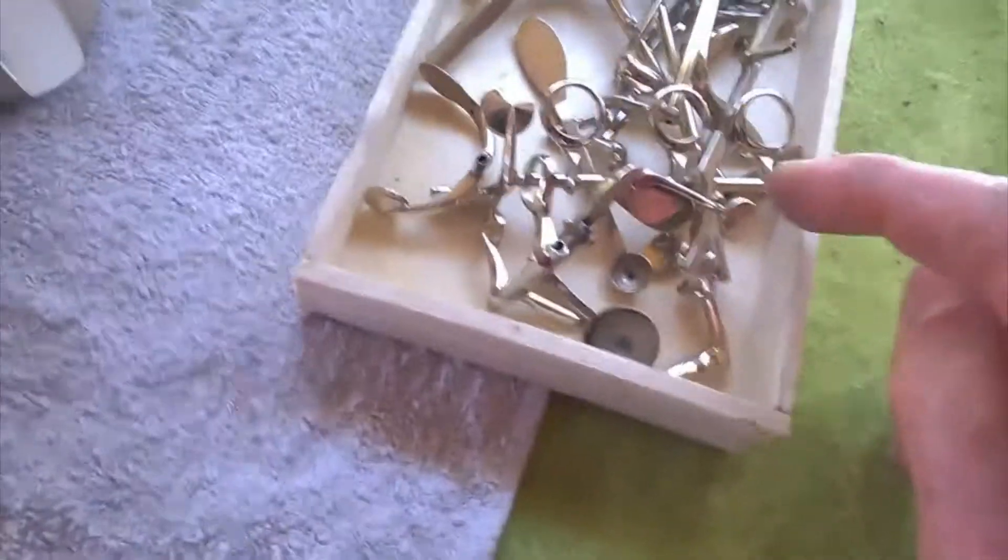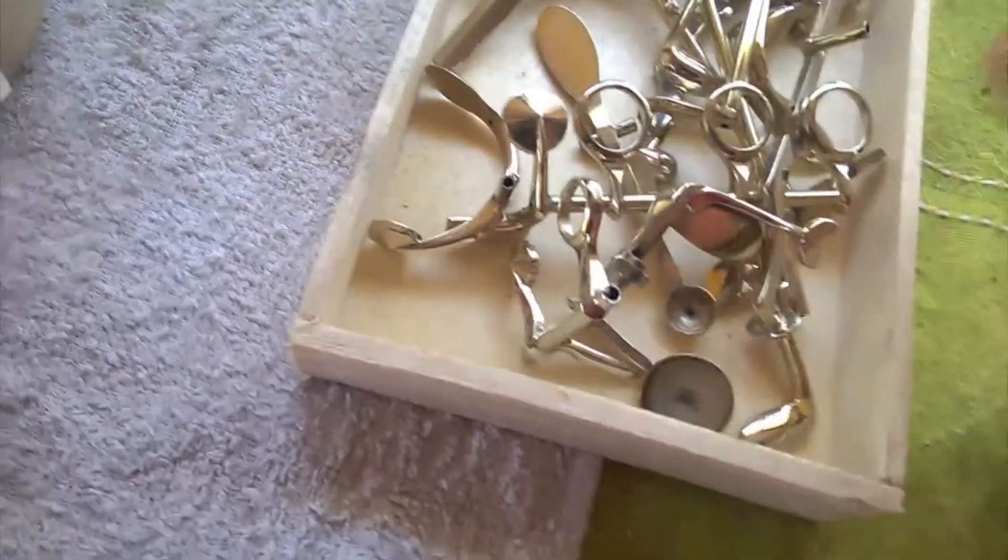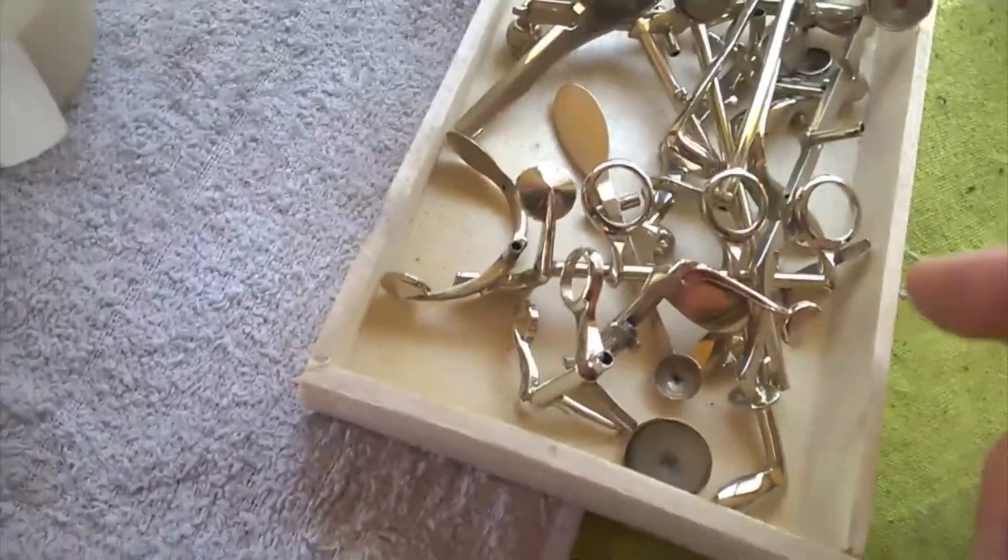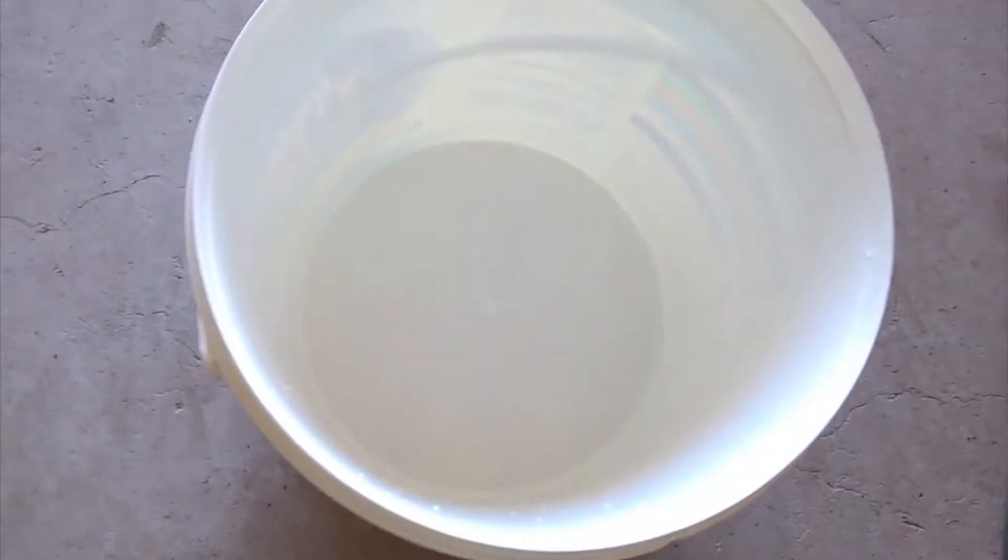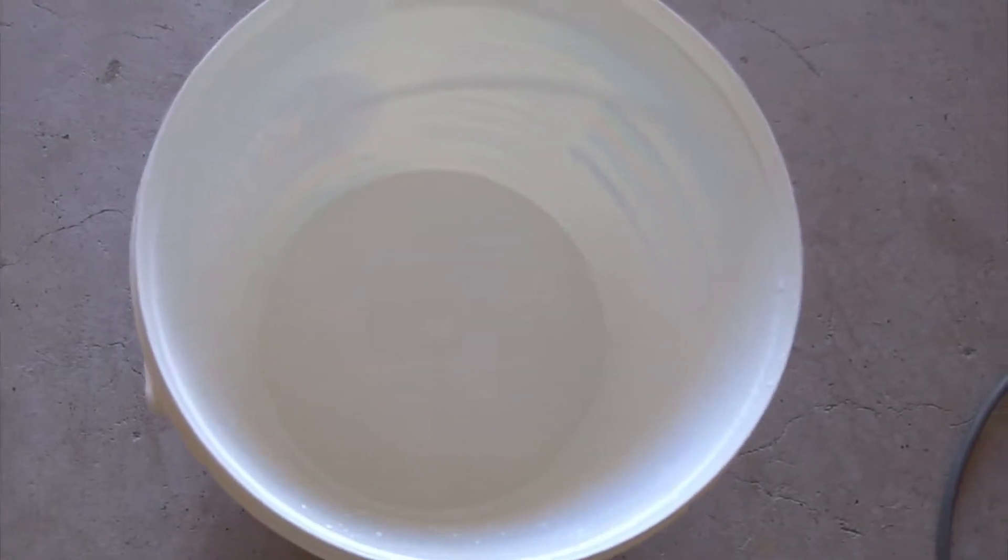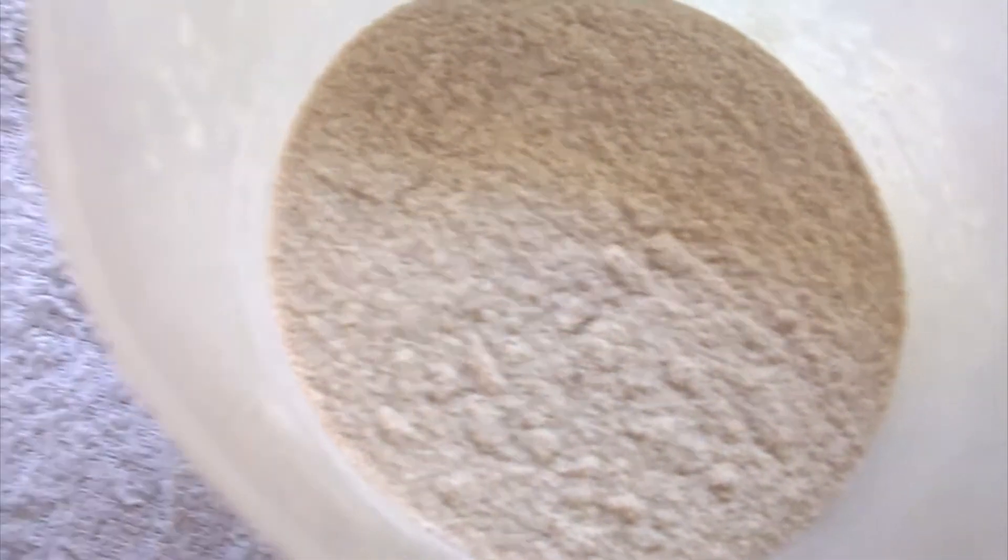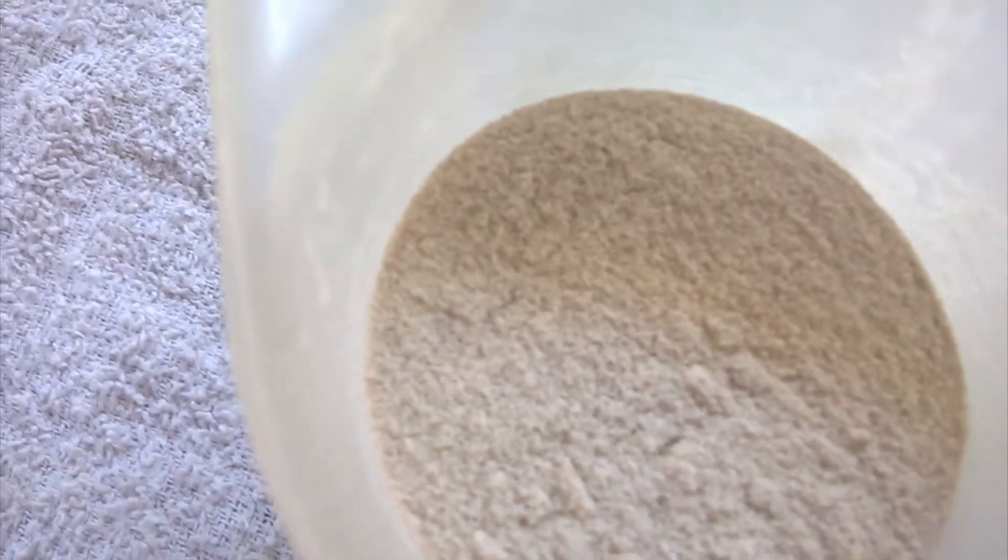I will immerse those parts in the degreaser to remove all the grease that's on them. It's important you don't have any grease whatsoever. That's a little container where I'll put the solution to clean them up - it's a mix of degreaser and distilled water that I will heat up to approximately 60 degrees Celsius.